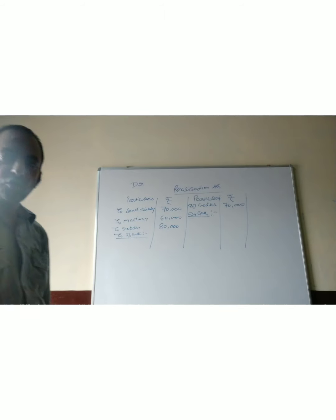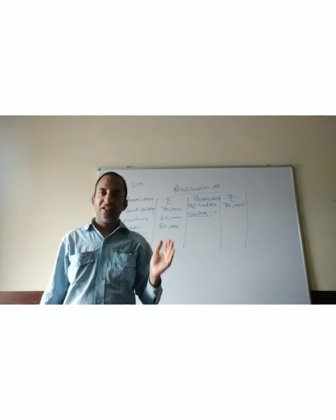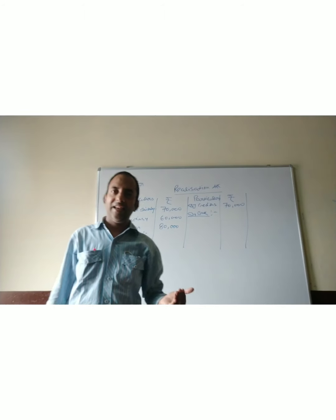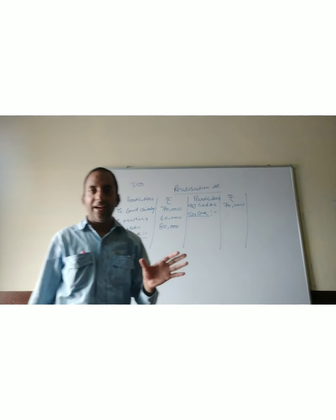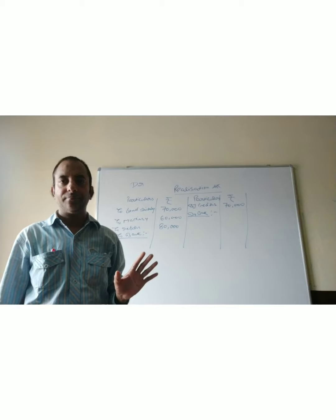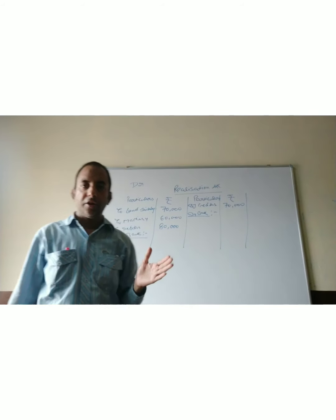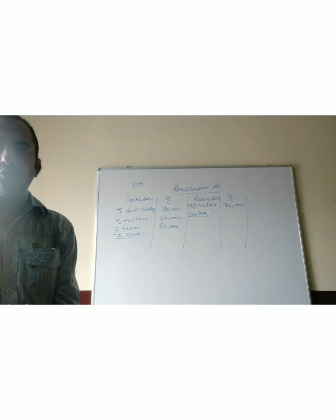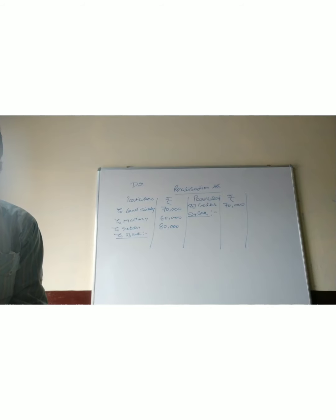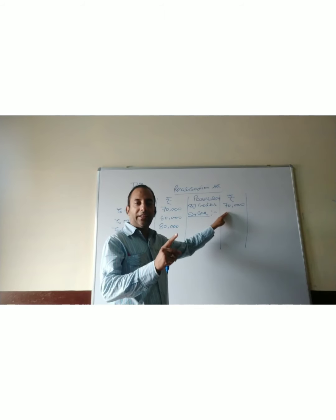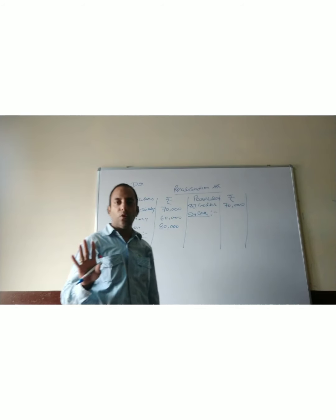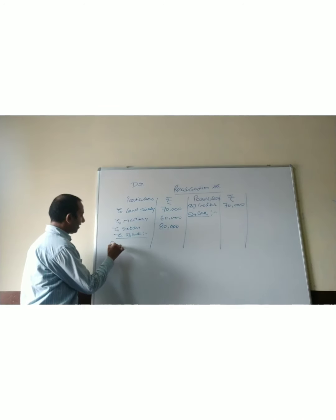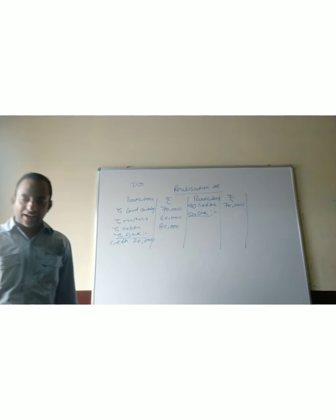First, creditors of rupees 50,000 took over land and building in full settlement of their claim. Total creditors are 70,000, and 50,000 worth took over land and building, so we will not record that because we will record only the payment which we will make. So 50,000 in land, no record, and the other payment is 20,000.